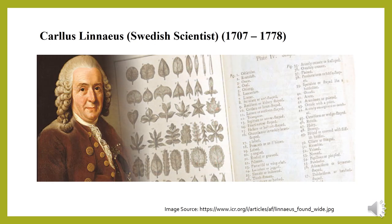Carlos Linnaeus laid the real basis for modern classification and nomenclature in his Systema Naturae, 10th edition, 1758. He recognized six classes of the animal kingdom: Mammals, Aves, Amphibia, Pisces, Insecta, and Worms, along with other vertebrates. He also established the binomial nomenclature, by which each organism is given a name made up of two Latin words.